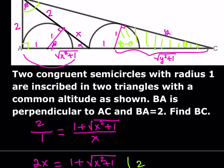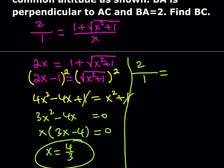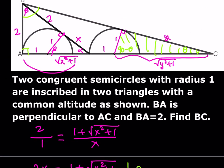In the larger triangle, across from 90 minus theta is AC. AC equals 1 plus the square root of x squared plus 1, plus 1 plus the square root of y squared plus 1. Since x equals 4/3, the square root of (4/3)² plus 1 equals the square root of 16/9 plus 1 equals 25/9, so that's 5/3. Adding 1 gives 8/3, plus 1 more gives 11/3. So this part is 11/3, and we add the square root of y squared plus 1 to it.